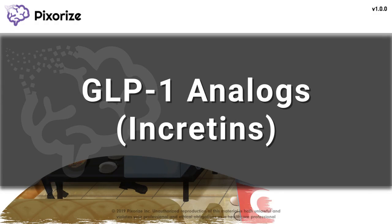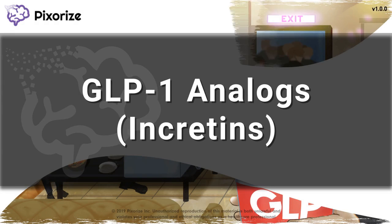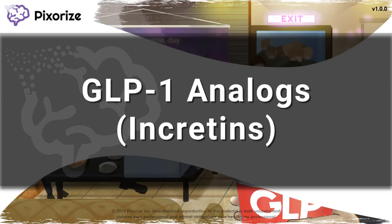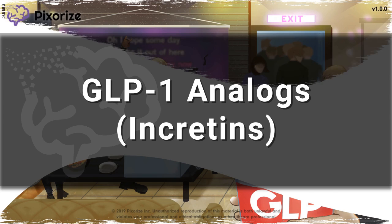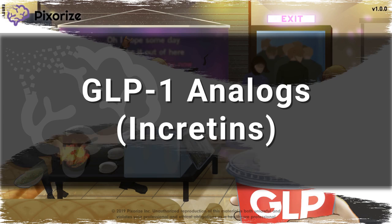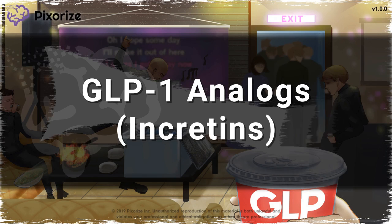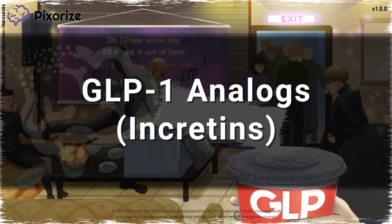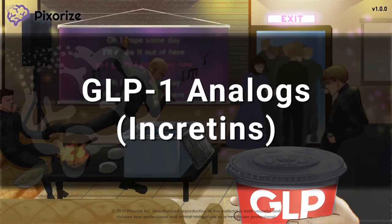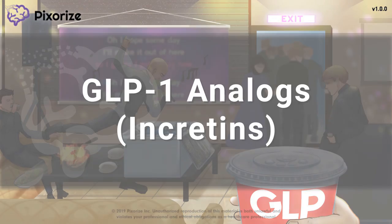GLP-1 analogs are medications used in the treatment of type 2 diabetes, and they work by increasing glucose-dependent insulin release. In this video, I'll give you a quick and easy way to remember everything you need to know for this class of drugs.